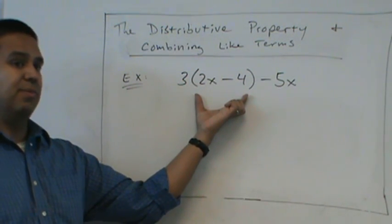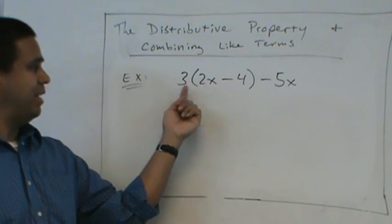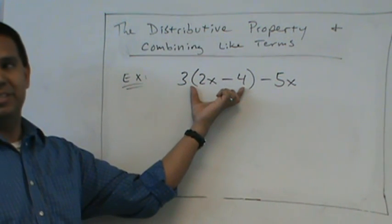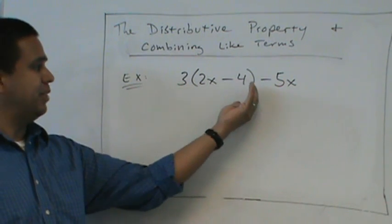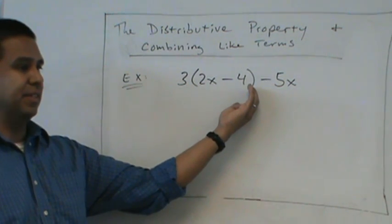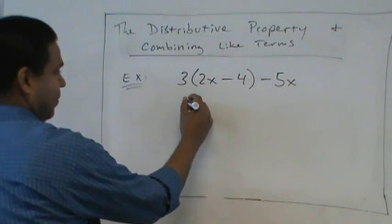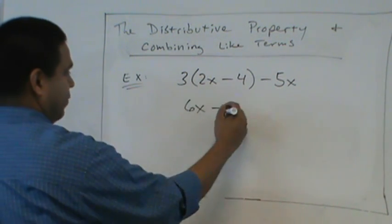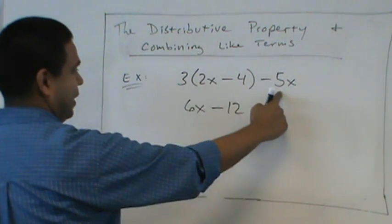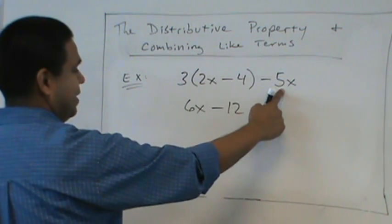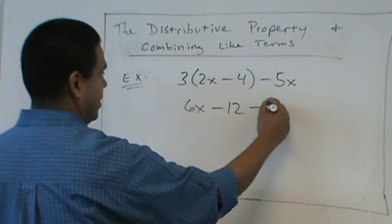So we're going to multiply the 3 with everything in the parentheses. And then we stop when we see the closed parentheses. So 3 times 2x? 6x. 3 times negative 4? Negative 12. Do I multiply those? No. Because he's not in the parentheses. He stays the same.